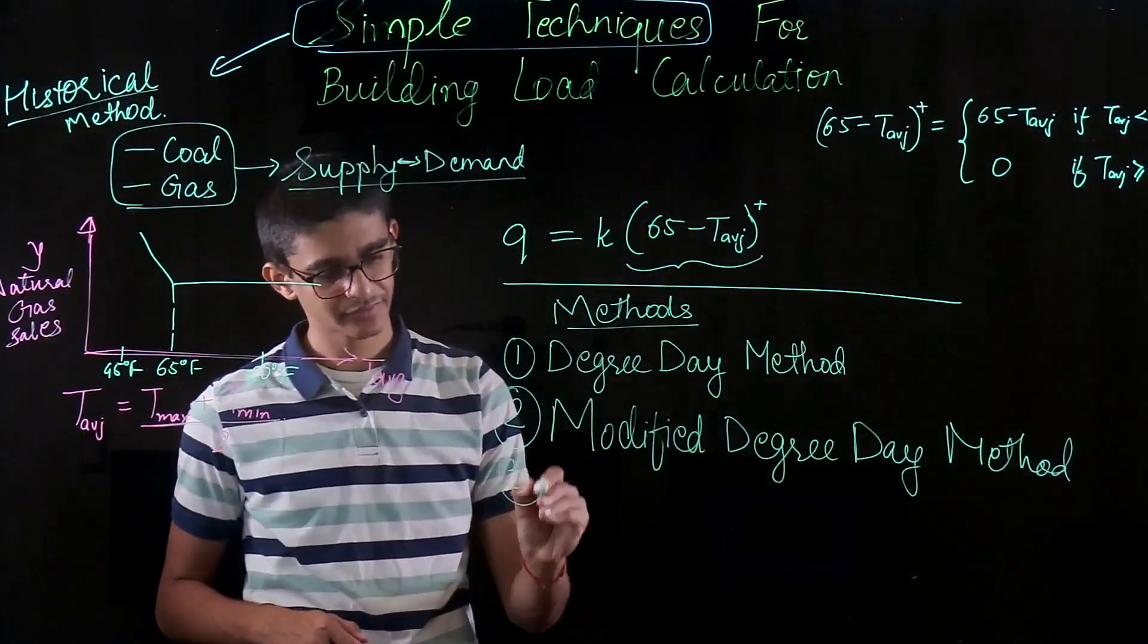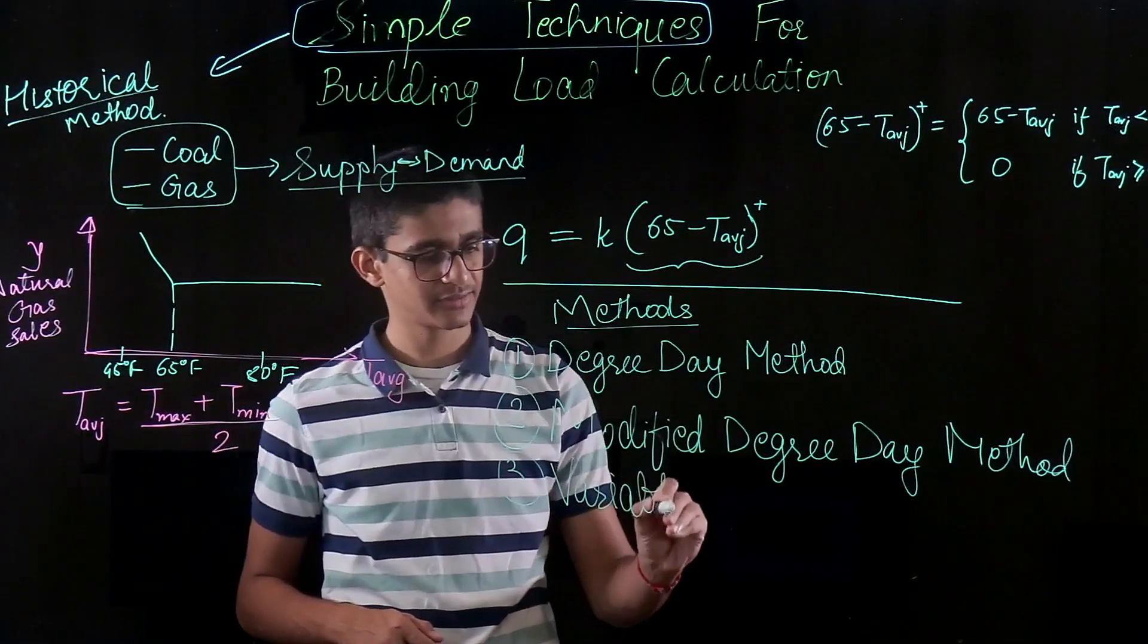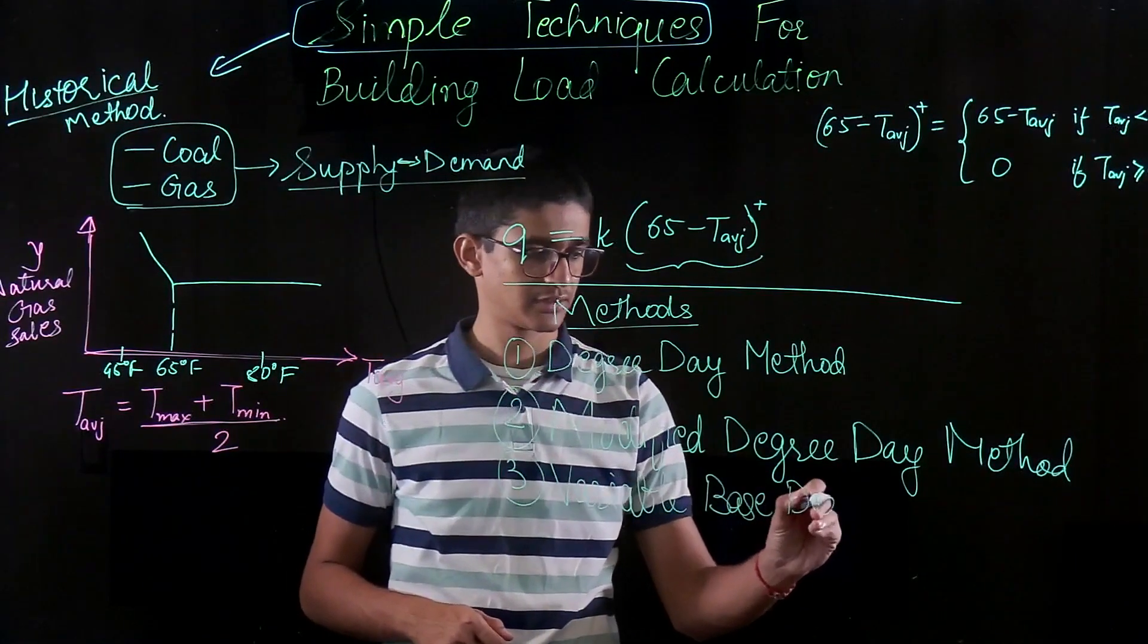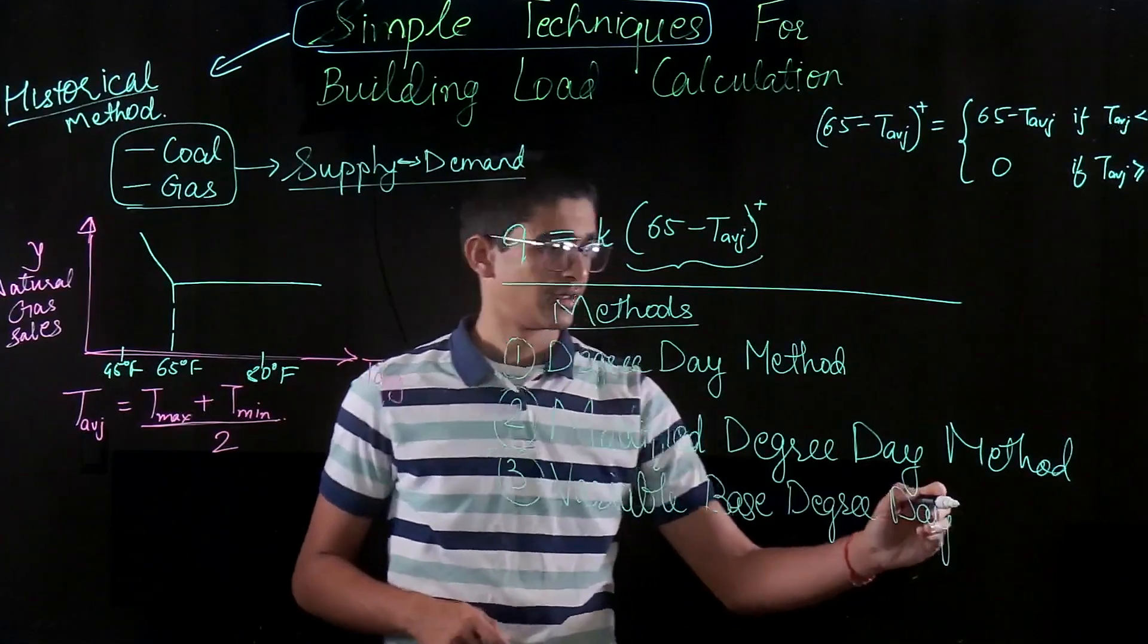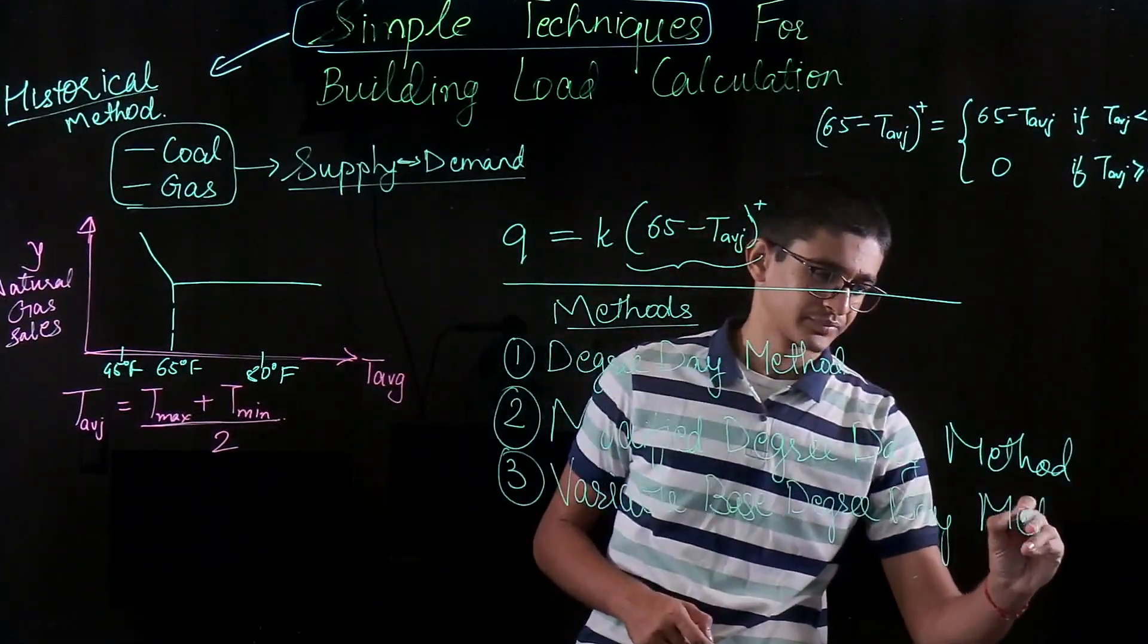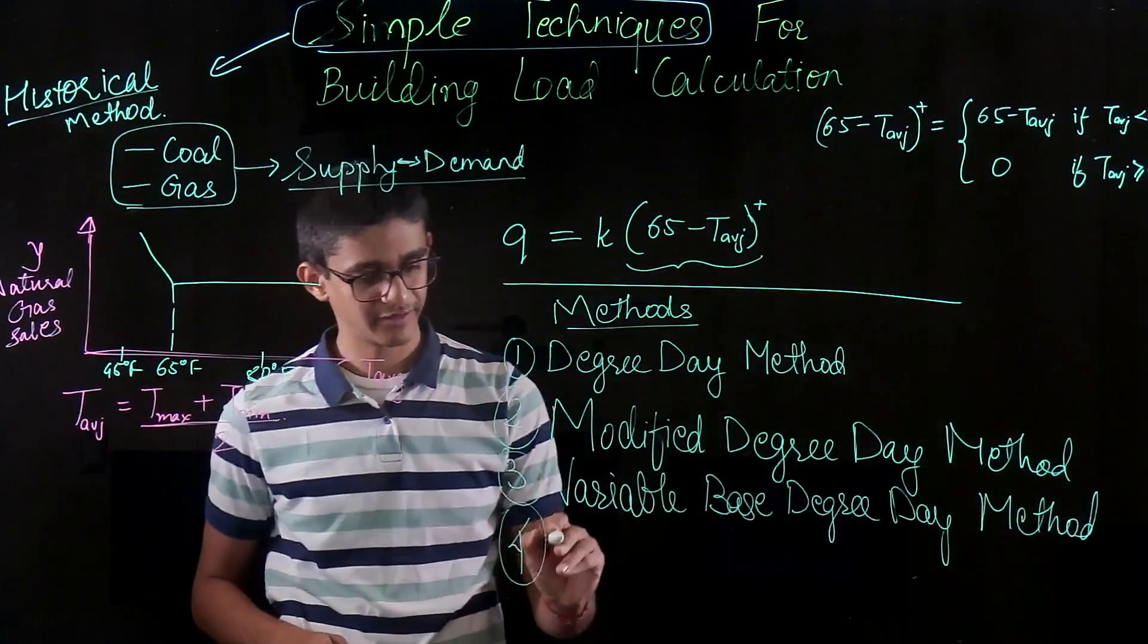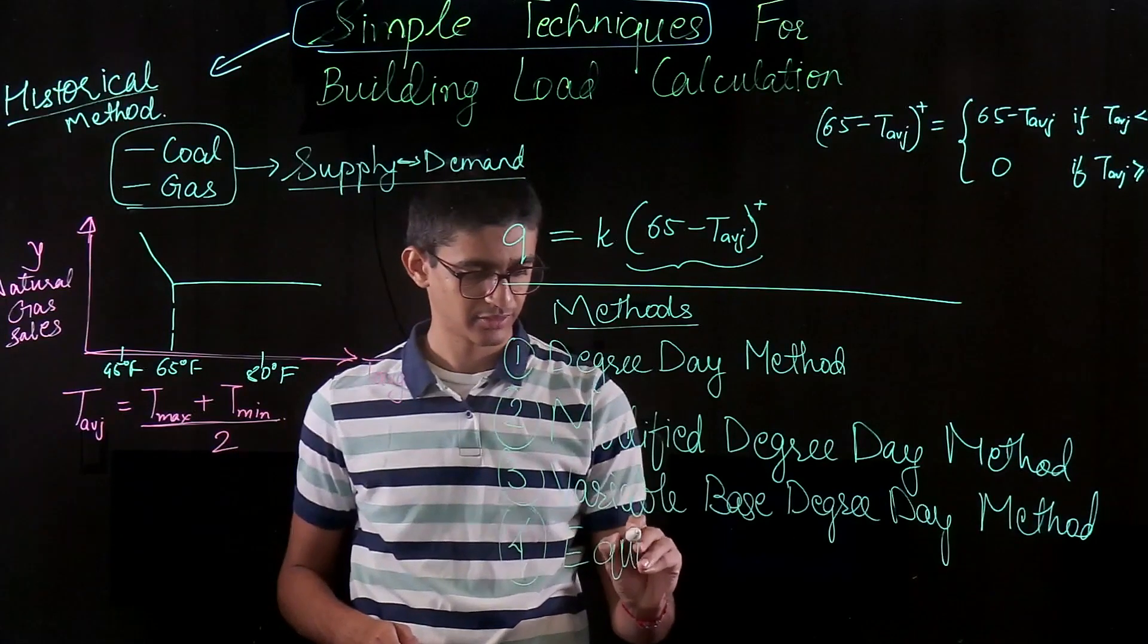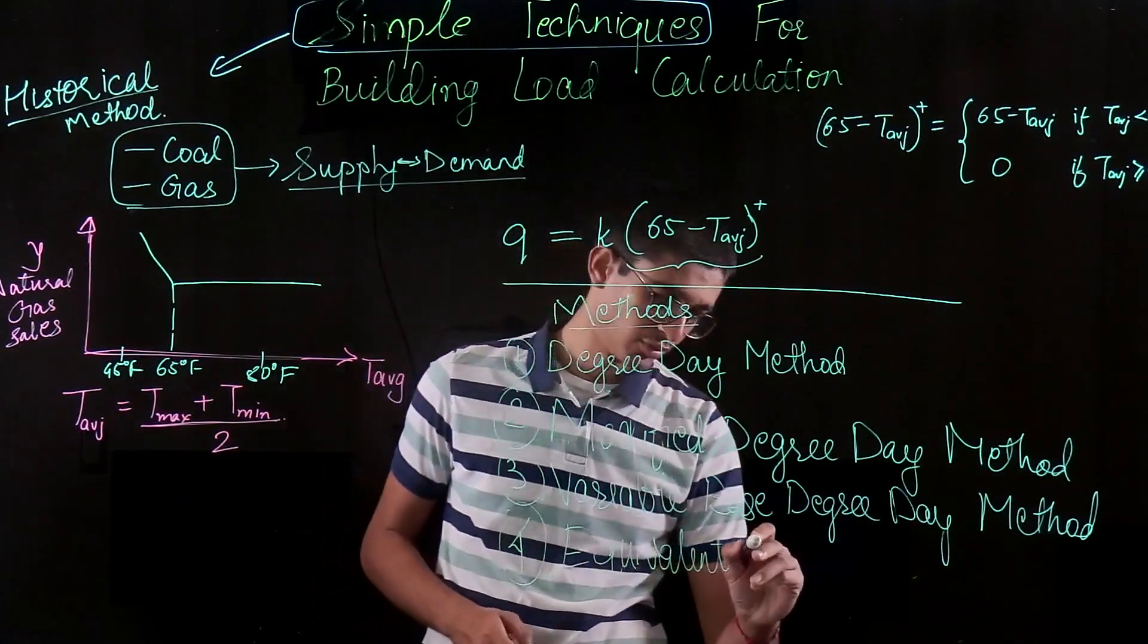The third is Variable Base Degree Day method. And the fourth one, which we will be covering, is Equivalent Full Load Hours.